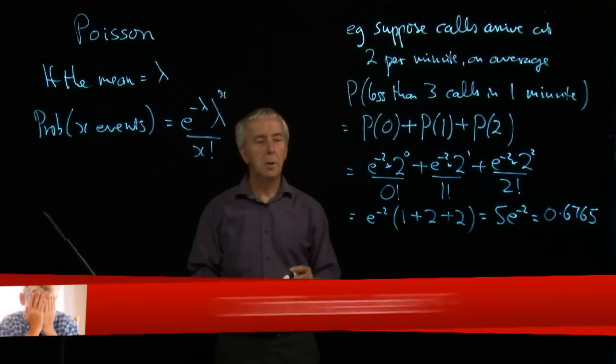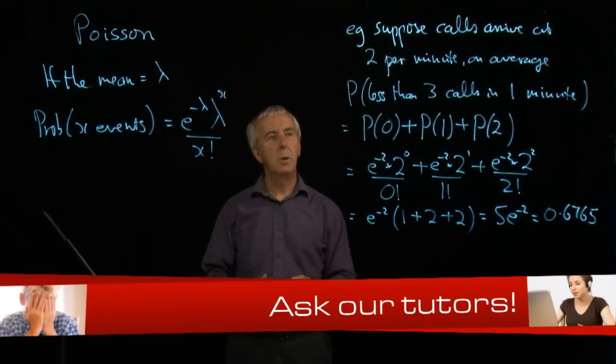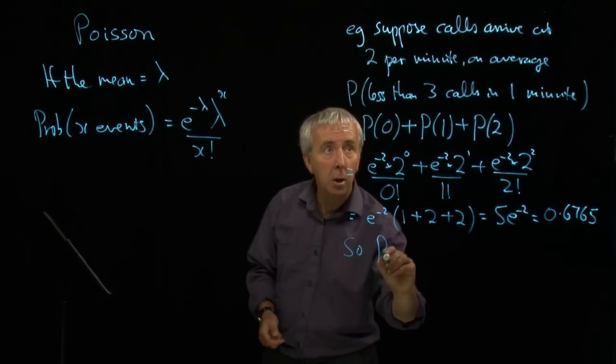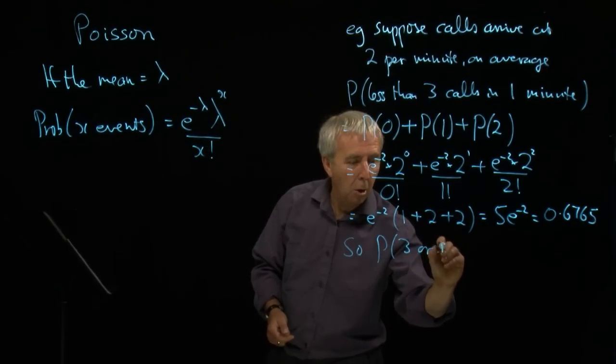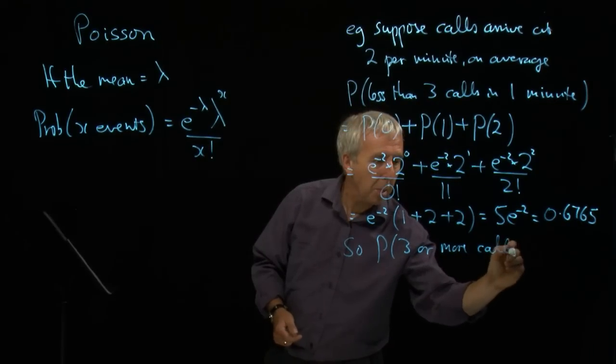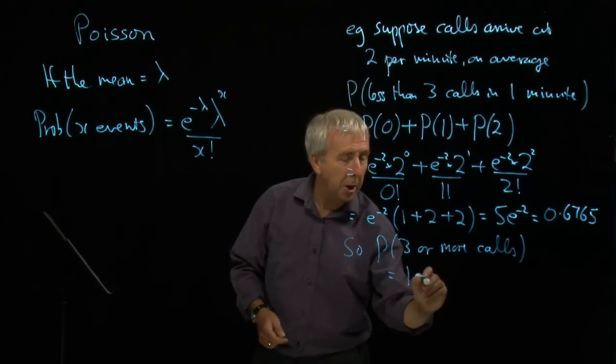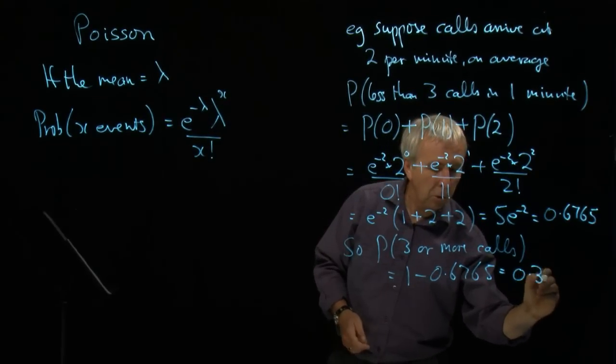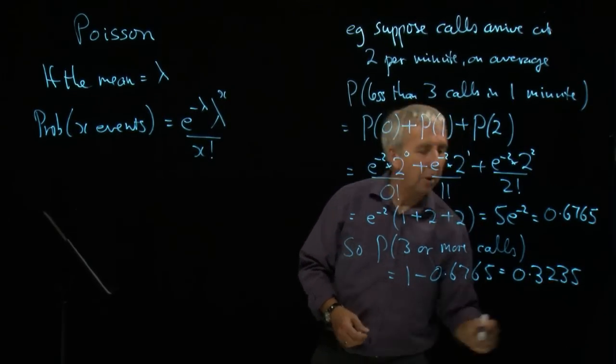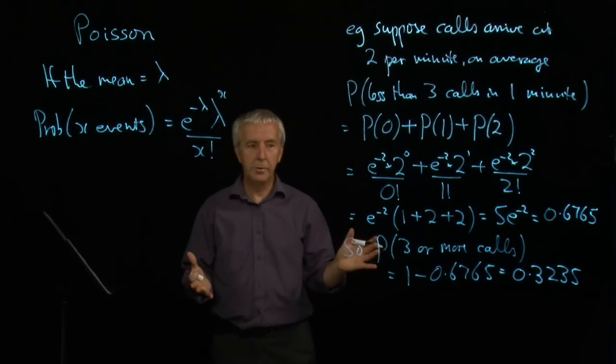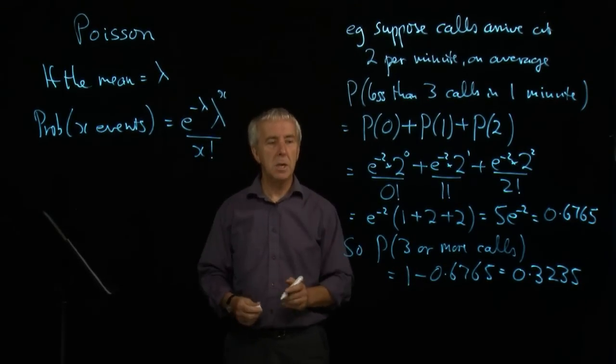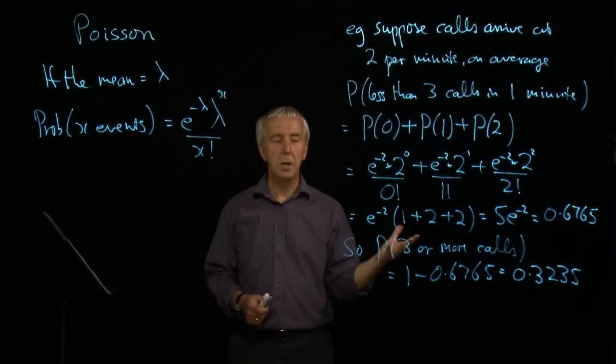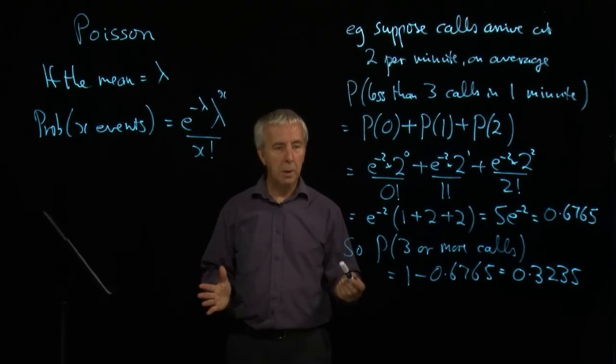That's the chance of getting two or fewer calls. So if I wanted to know what's the chance of three or more, the probability of three or more calls would be one minus 0.6765, which is 0.3235. There's a 32% chance that in any particular minute, I will get three or more calls. So if I only had two receptionists on duty, there's going to be a 30 odd percent chance that they won't be able to cope.